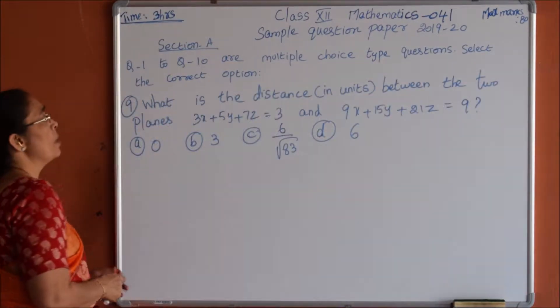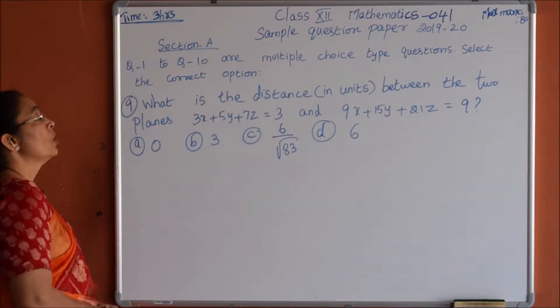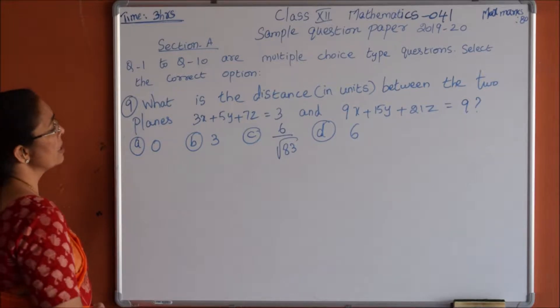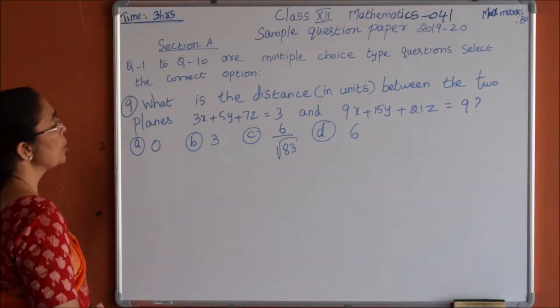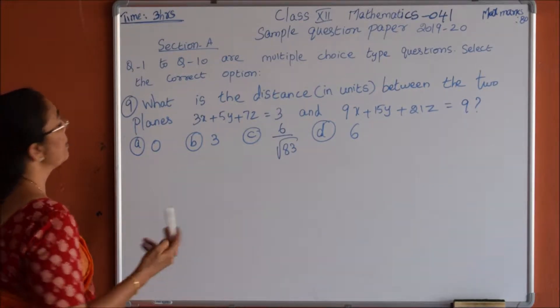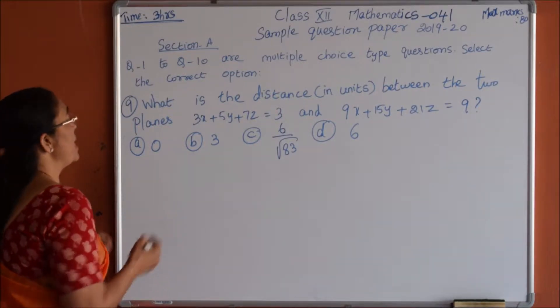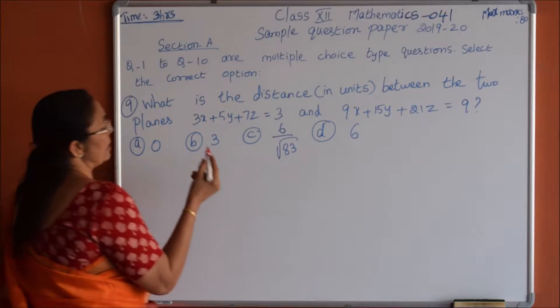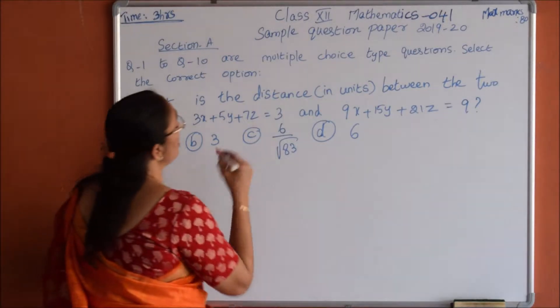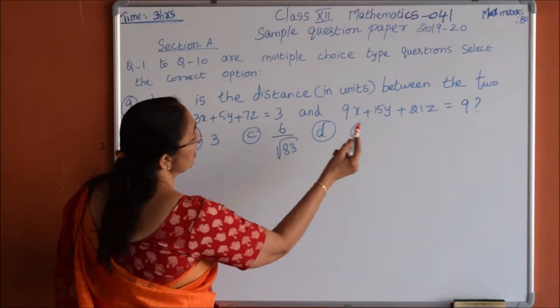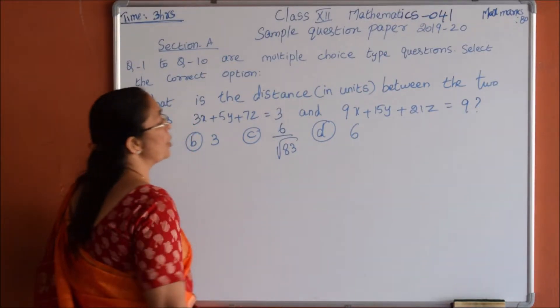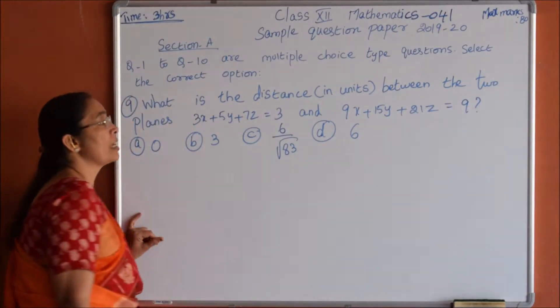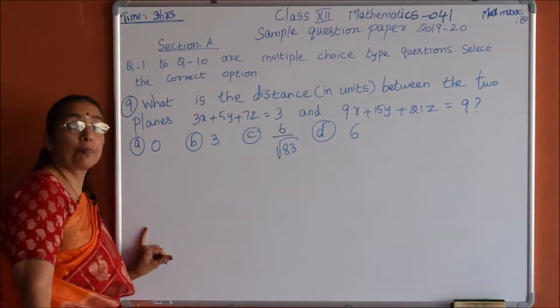9th problem: what is the distance in units between the 2 planes 3x plus 5y plus 7z equals 3 and 9x plus 15y plus 21z equals 9?